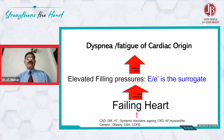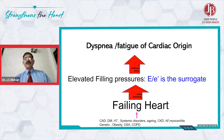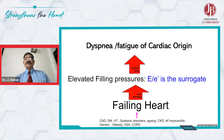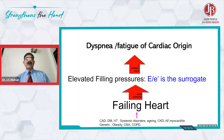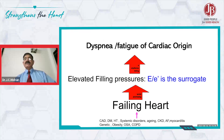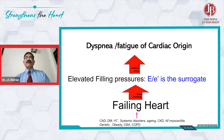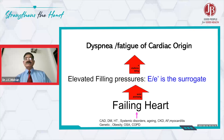Clinically, what do we call a failing heart? Multiple underlying conditions — like coronary artery disease, diabetes, hypertension, aging, CKD, obesity, obstructive sleep apnea, COPD, and myocarditis — could cause a failing heart. And what does a failing heart cause? Elevated filling pressures.